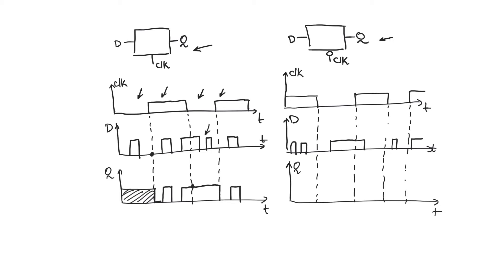The active low latch is a latch which is transparent during the zero phase of the clock. So we will see exactly the opposite of what happened in the previous latch. During the first one phase it is undefined because we don't know what the initial state of Q was. As soon as we enter the zero phase of the clock, Q will follow D.